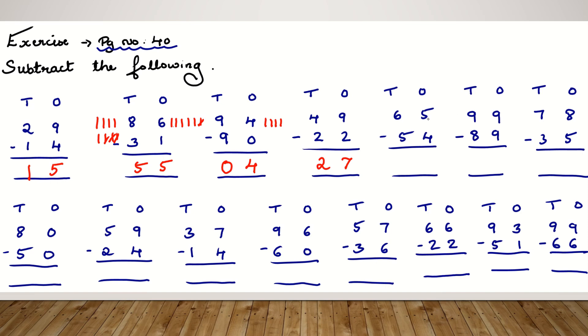Next one we have 65 minus 54. 5 minus 4 is 1. 6 minus 5 is 1. If you are very quick in subtracting directly, you can use your knowledge and just write the answer.